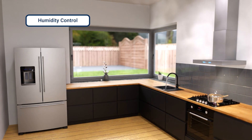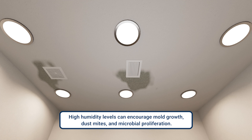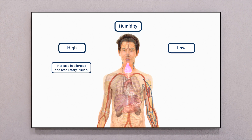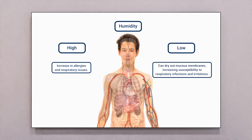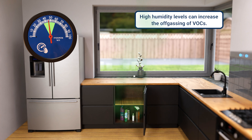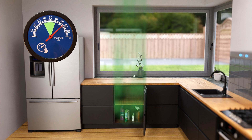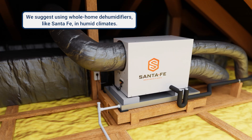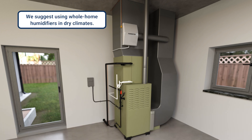Humidity control: High humidity levels can encourage mold growth, dust mites, and other microbial proliferation, causing an increase in allergies and respiratory issues. Low humidity can dry out mucous membranes, increasing susceptibility to respiratory infections and irritations. The ideal indoor humidity range is between 35% and 60% relative humidity. High humidity levels can also increase the off-gassing of VOCs. We suggest using whole-home dehumidifiers like Santa Fe in humid climates, and whole-home humidifiers in dry climates, properly installed by a professional in conjunction with the existing HVAC equipment.